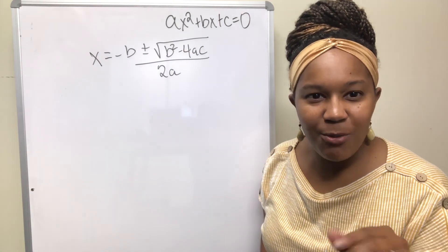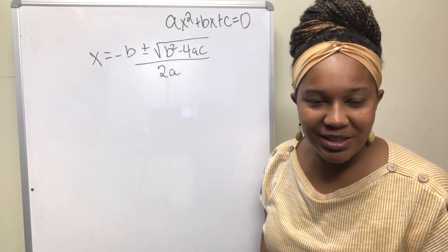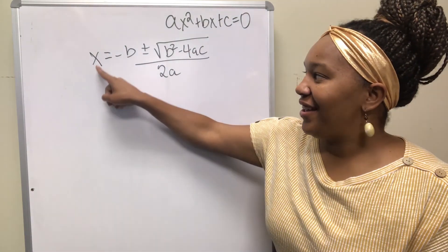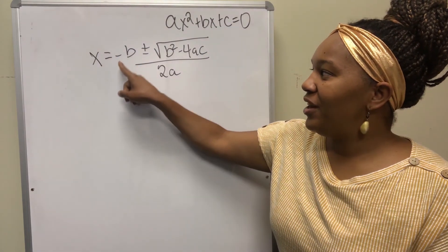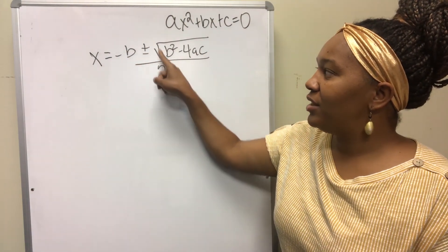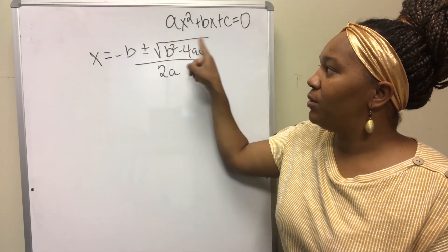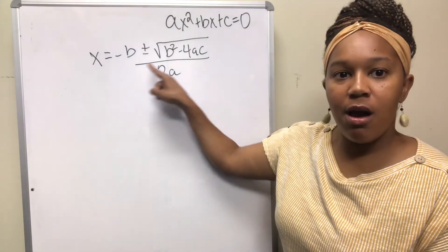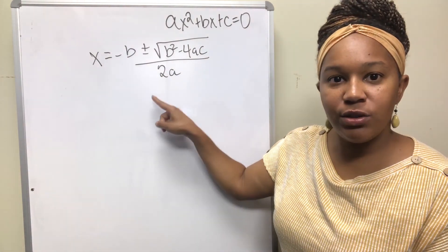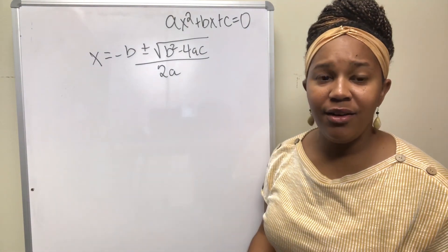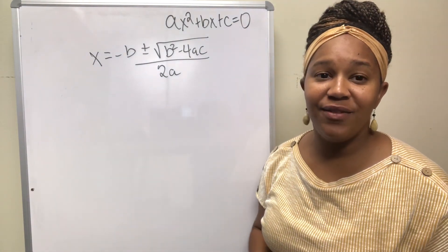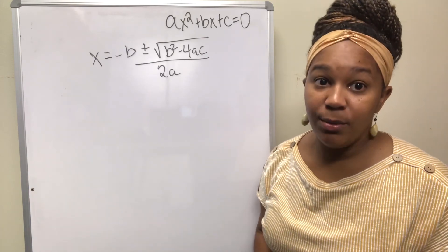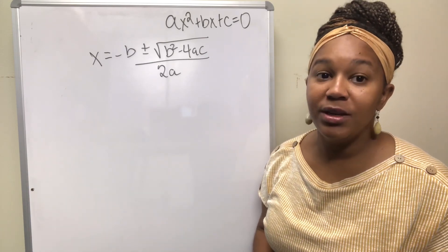Alright, let's do it one more time — I want you to sing it with me this time. Here we go: 'X equal negative B plus or minus square root, B squared minus 4AC, all over 2A.' So again, if you can sing it, sing it over and over — it'll help you remember it. Trust me, it will.